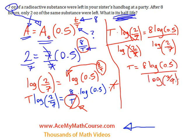And now let me quickly plug that into the calculator to evaluate it. So, we have 8 log half over log 2 over 7. And we get approximately 4.43.